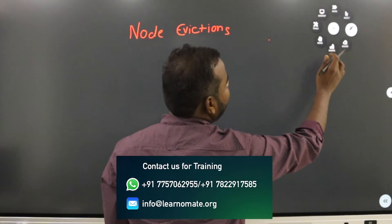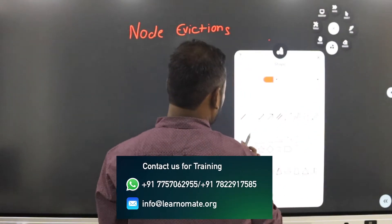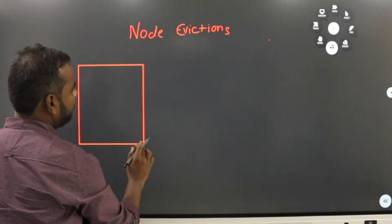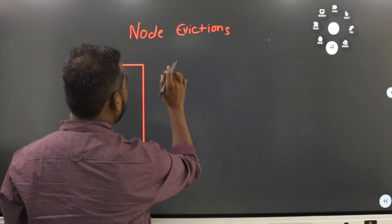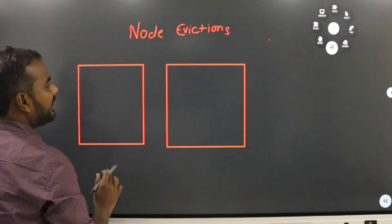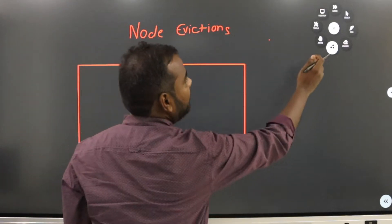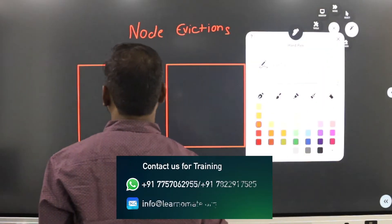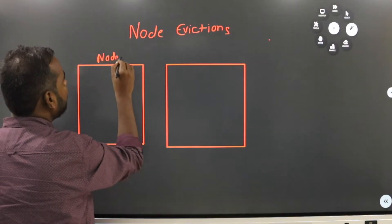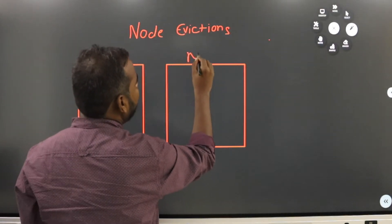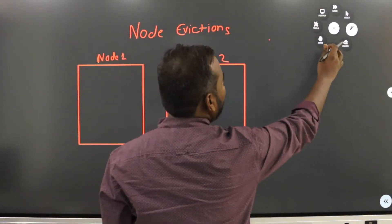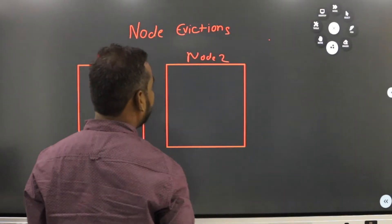Let's take an example. We'll be working with a two-node or three-node cluster. This is my first node and this is my second node — I'm assuming these are my two-node cluster. On each node, your Oracle database instances are running.